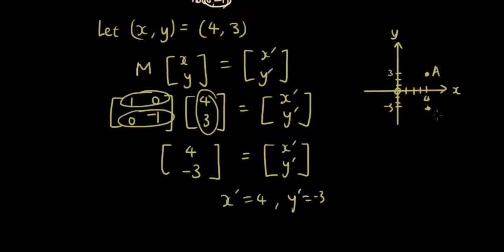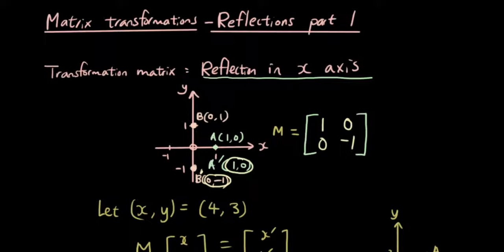So that is definitely correct. So if I call this A, then this will be A dash. So that is how you reflect a point in the x axis. Now we're going to do reflection in the y axis.